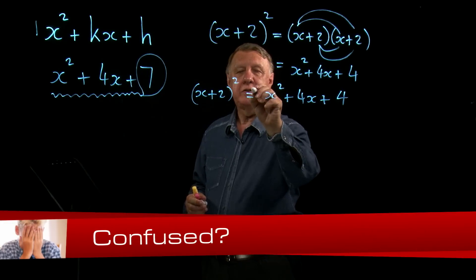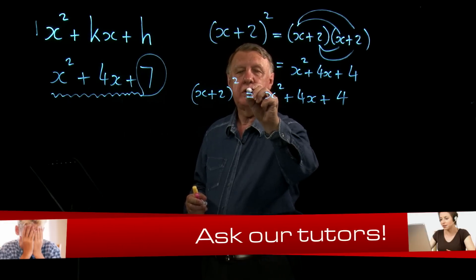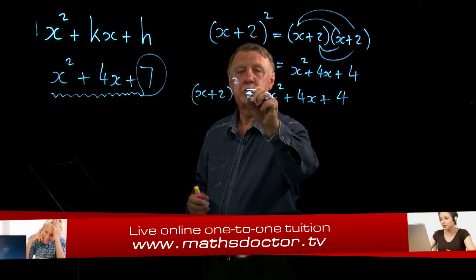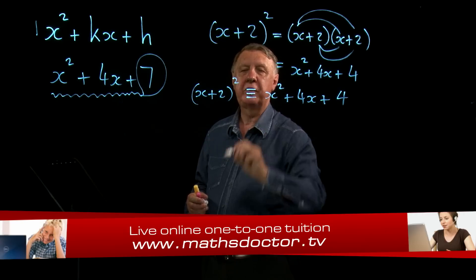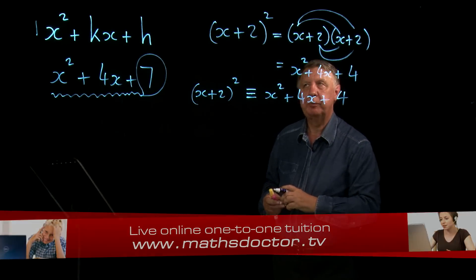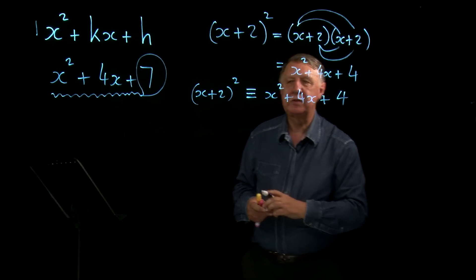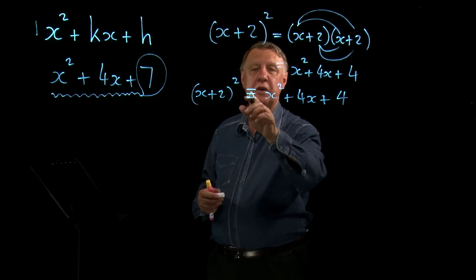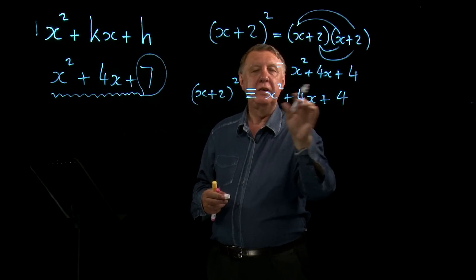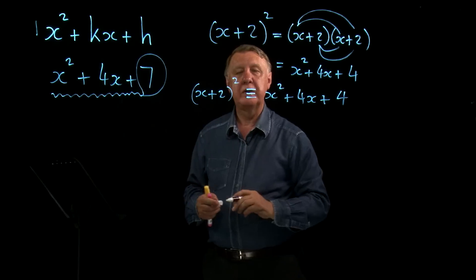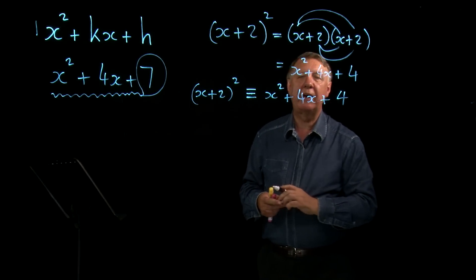Now, again, let's get the notation right because it's good to be correct. I should really put a three line equal sign there. That's an equivalent sign. And the equivalent sign means that this side is exactly the same as the other side, but written out in a different way.